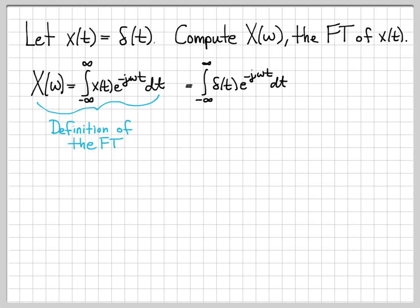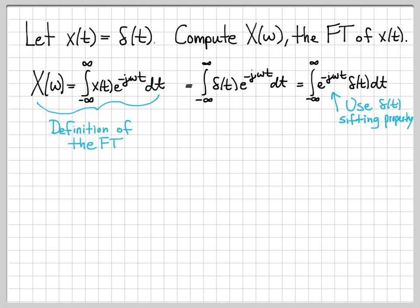For this specific problem, our time function is an impulse, so we substitute and replace x of t with delta of t. I'll rewrite that slightly — instead of writing it as delta of t times e to the minus j omega t, I'll write it as e to the minus j omega t times delta of t, because this form more closely matches the sifting property of the delta function.